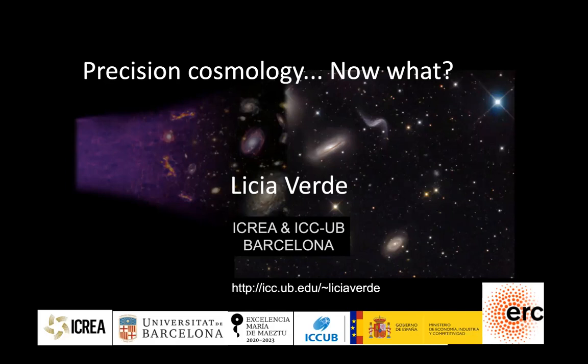Alicia Verde is an Italian cosmologist and theoretical physicist. Currently, she is a professor of physics and astronomy at the University of Barcelona. She received a laureate degree in 1996 from the University of Padova, and a PhD in 2000 from the University of Edinburgh. She did postdoctoral studies at Princeton and joined the faculty of the University of Pennsylvania in 2003. From September 2007, Professor Verde is a professor at the Institute of Ciencias del Cosmos of the University of Barcelona.